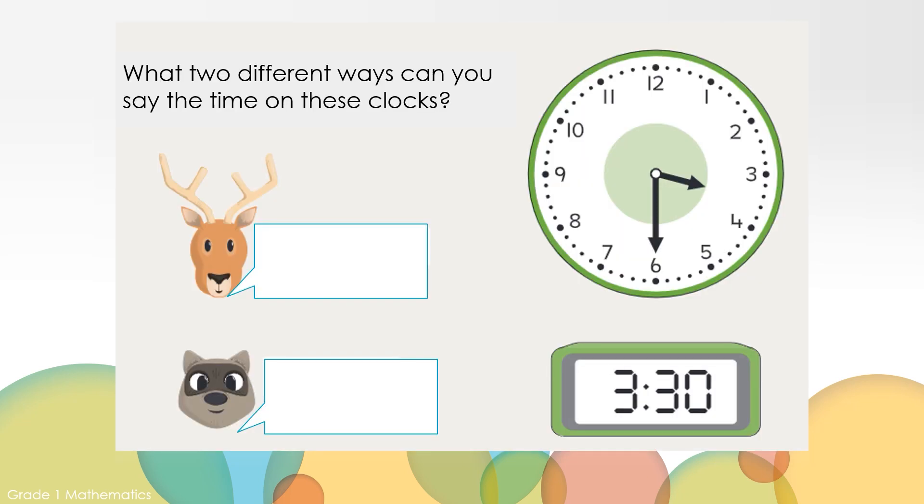What two different ways can you say the time on these clocks? We could say the time as half past three or we could say the time as 3:30.